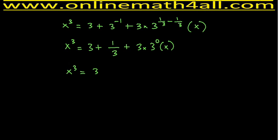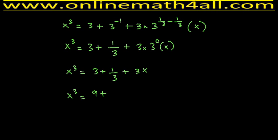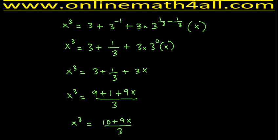Now I am going to add the fraction 1/3 to 3 and 3x. To add this fraction, I multiply the whole number 3 by the denominator 3: 3 times 3 gives 9, plus 1 gives 10; and 3 times 3x gives 9x. Taking 3 as the common denominator, we get x³ equals (10 + 9x) over 3.